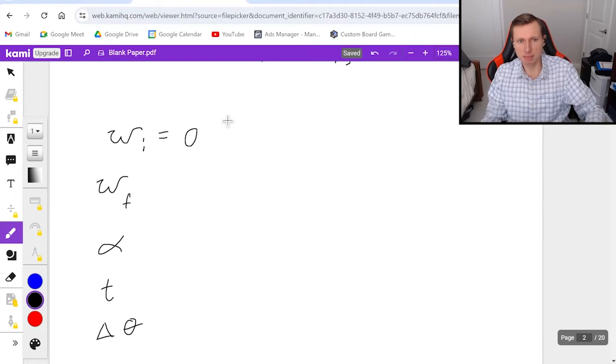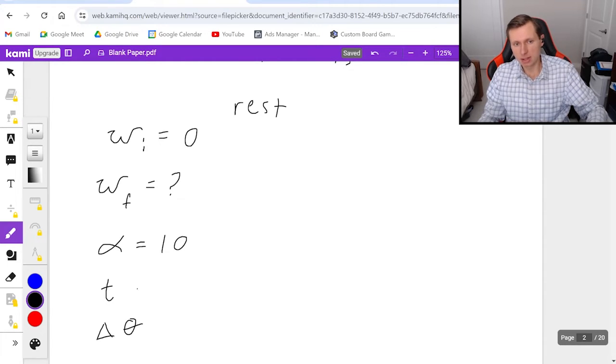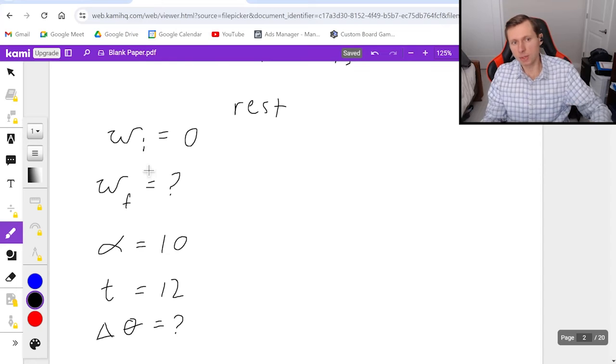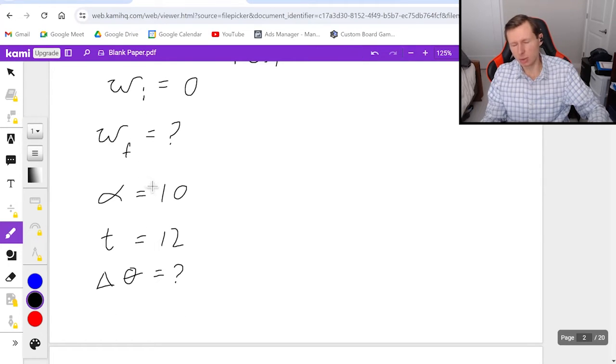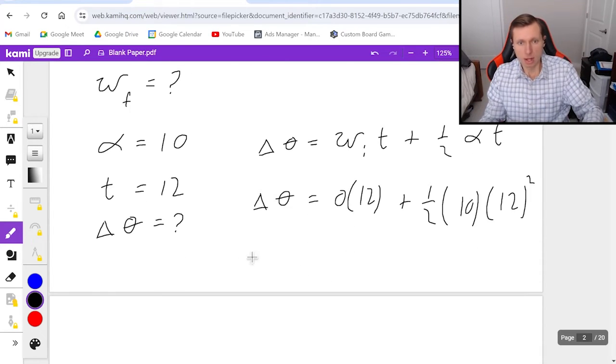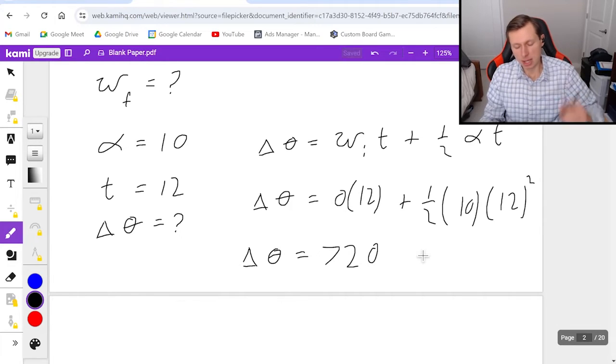We are starting from rest. I didn't say that, but I should have wrote it somewhere. Omega initial is zero. Omega final is unknown. Alpha is what we just found. It's 10. The time is 12. And delta theta is what I'm solving for, because I want to know how many revolutions I'm completing. So I'm going to choose the equation that does not have omega final in it. It's going to be this equation. Delta theta equals omega initial times time plus one half alpha t squared. I have all these numbers except for delta theta, which is what I'm solving for. So omega initial's zero times 12 plus one half times alpha 10 times time 12 squared. Plug this in a calculator and you'll get 720.